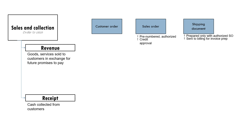It is the shipping document that is sent to the billing department for invoice preparation. The moment items have been shipped and we have the shipping document, this document will be sent to the billing department, and the billing department will prepare the sales invoice. The sales invoice must also be pre-numbered and authorized, and can only be prepared if there is a shipping document. This sales invoice is then sent to the accounting department for recording — the main purpose of the accounting department is to do the recording, and the basis for recording the sale will be the sales invoice.